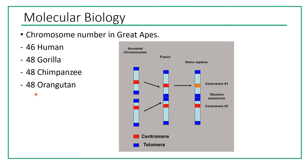Without the theory of evolution, the question of why humans have 46 chromosomes while gorillas, chimpanzees, and orangutans have 48 would simply be answered 'because we were created this way,' and we would never investigate further. We would never have discovered chromosome 2's unique structure. The theory of evolution keeps us asking questions and doesn't allow us to give simple answers to very complicated questions.